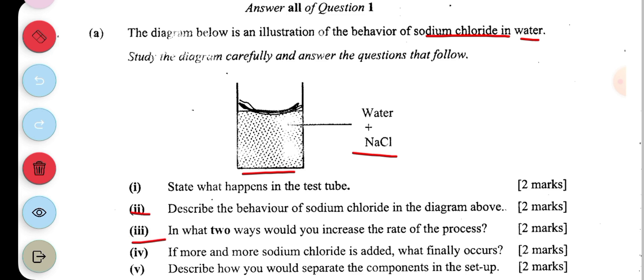And then part three, it says in what two ways would you increase the rate of the process? So the rate of the dissolving. One, you can stir with the stirring rod. You can also heat by increasing the kinetic energy of the particles that make up the sodium chloride.